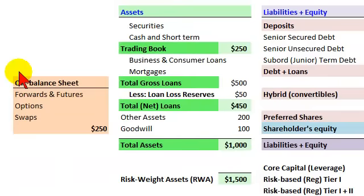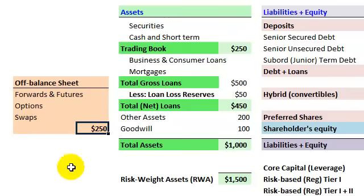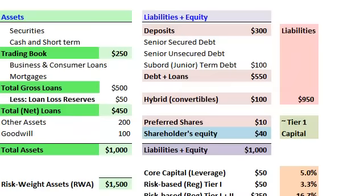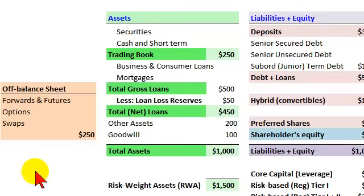I also have off-balance sheet instruments here. These are not being booked with a carrying amount on the balance sheet. They would typically include derivatives — forwards and futures, options, swaps, and credit derivatives like the infamous credit default swap. The value of those off-balance sheet instruments is $250. While they may not show up in the carrying amount for total assets, they will contribute to the regulatory ratio that includes risk-weighted assets, since these off-balance sheet instruments do constitute contingent exposure.